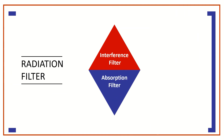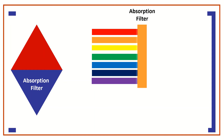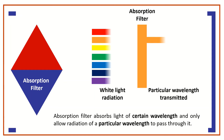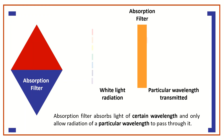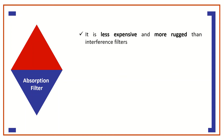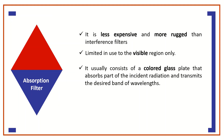Absorption filters absorb light of certain wavelengths and only allow radiation of a particular wavelength to pass through. This type of filter is generally less expensive and more rugged than interference filters, and is limited in use to the visible region. It usually consists of a colored glass plate that absorbs part of the incident radiation and transmits the desired band of wavelengths.